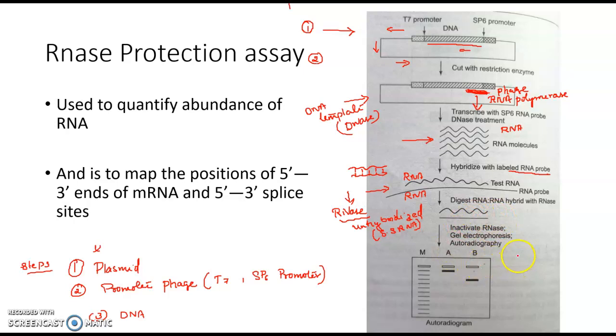After that we will only have hybridized RNAs in our solution and we will put this RNA into gel electrophoresis. Usually we use polyacrylamide gel electrophoresis for this process. So we use polyacrylamide gel and we run the gel electrophoresis. After that we will get a band like this and we will go for autoradiography.